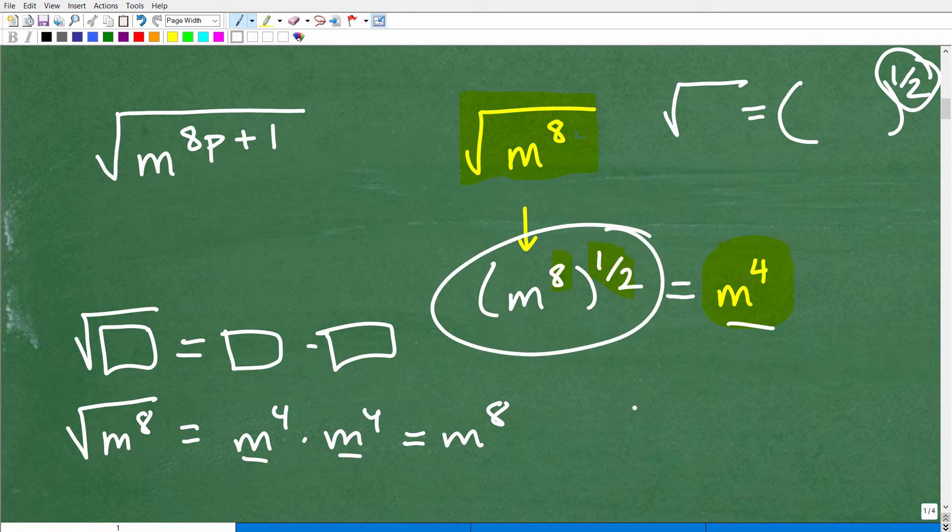the square root of something is something times something else or something times itself gets us back to this answer. So if we're trying to find the square root of m to the 8th, and we're saying it's m to the 4th, that's m to the 4th times m to the 4th. What do we do here when we're multiplying powers with the same base? We add the exponents. That's m to the 8th. Now, this is just a quick review. Also on this,